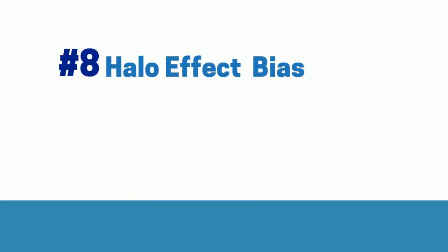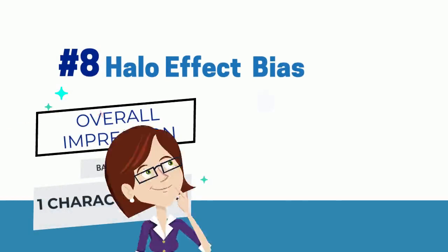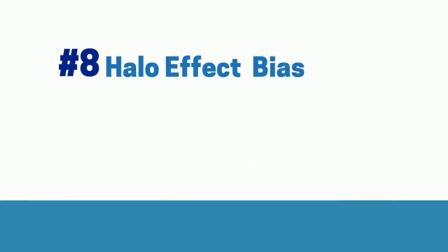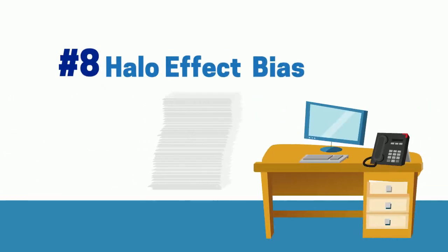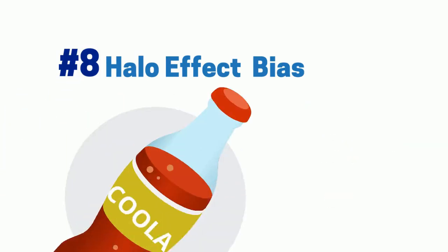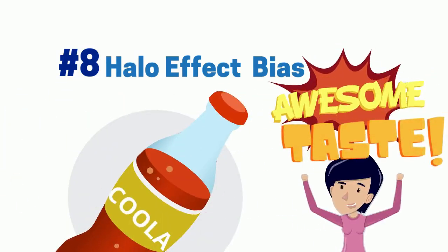8. Halo Effect Bias. People have the tendency to hold an overall impression of something based on only one characteristic. For example, a moderator may make an assumption about a respondent based on a first, positive impression. A respondent may respond to a series of questions on a brand based solely on their feeling about one attribute.